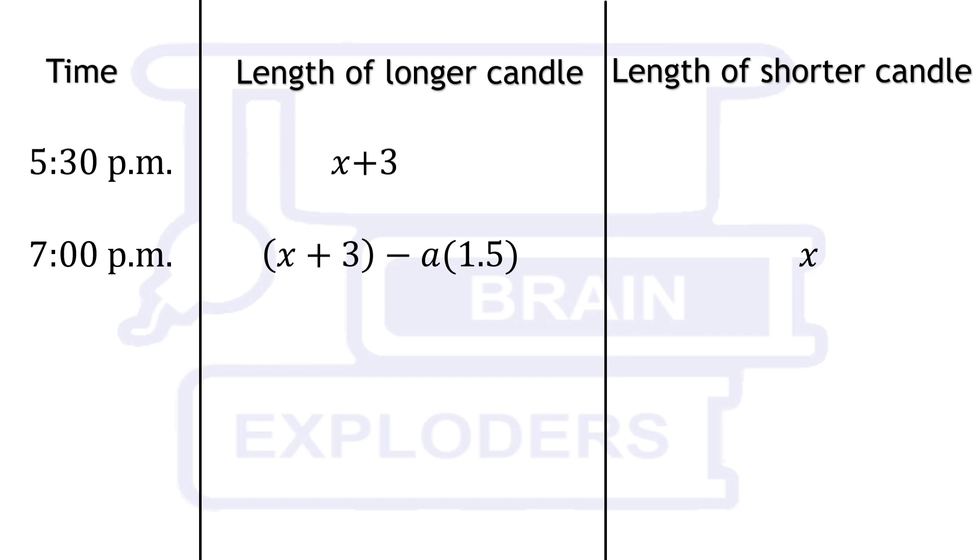At 7 pm, shorter candle is lighted. Between 7 pm and 5:30 pm, there is a difference of 1.5 hours. Hence, length of longer candle is decreased by a times 1.5 cm. It is same as the concept of speed, distance and time.